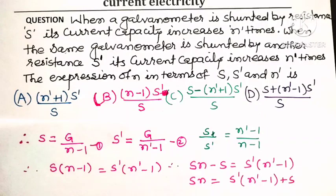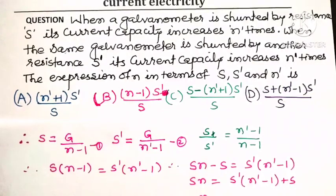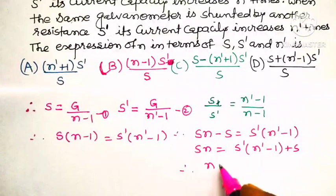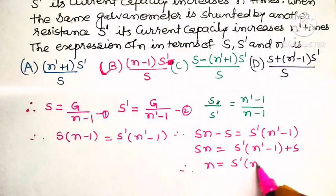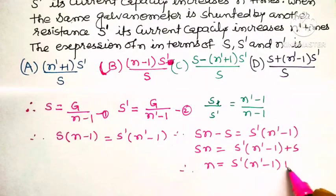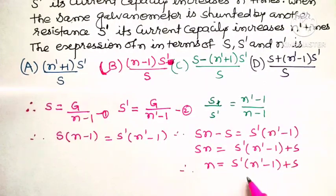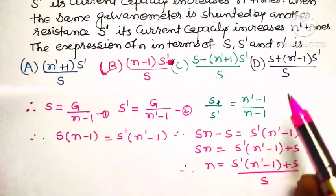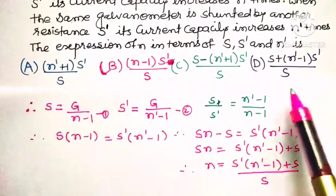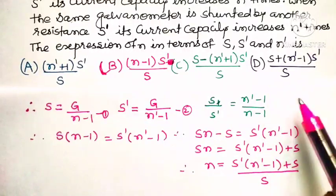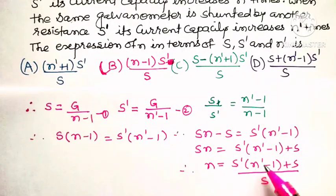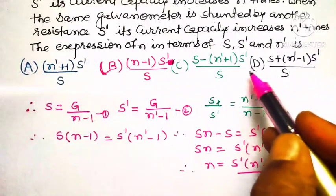We are interested in finding the expression for n. So dividing both sides by S, n = [S'(n' - 1) + S] / S. Looking at the options, option D gives S plus (n' - 1) into S', all divided by S. So for this question, option D is the correct answer.